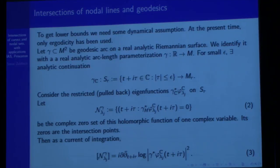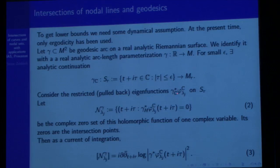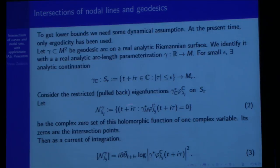Now I'm going to start stating a sequence of results about intersections of nodal sets with curves. For lower bounds at the present moment we need dynamical assumptions, and ergodicity has always been used. There are almost no results in between the integrable and ergodic cases. Let gamma be a geodesic arc; analytically extend it and think of it as a holomorphic strip. Pull back the eigenfunction — restrict it to the complex geodesic — and look at the nodal set along the complexified geodesic.